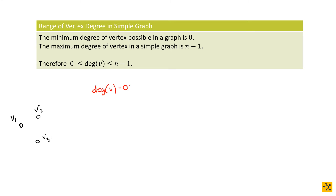Then you can have the situation of: what can the maximum vertex degree be in a graph? We've already started covering this when we looked at complete graphs, because in complete graphs every vertex is connected to every other vertex. That's the maximum situation in a simple graph — you can connect v1 to v2 and v1 to v3, but you can't connect v1 to itself, and you can't make extra connections between v1 and v2 or v1 and v3 because it's a simple graph. So v1 can be connected to every other vertex.